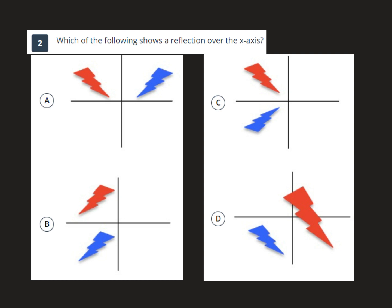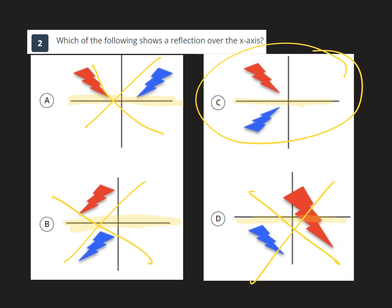Next problem: which of the following shows a reflection over the x-axis? The x-axis is the one that goes across. We eliminate anything that isn't a reflection — a reflection looks like a mirror. D is clearly not a reflection, and A goes across the x-axis but doesn't mirror correctly. That leaves B and C. Only one of them is a mirror image, and that would be C. B is not our answer.